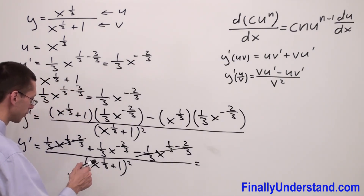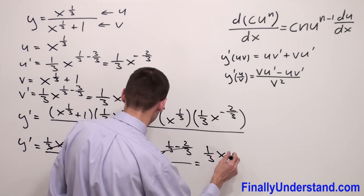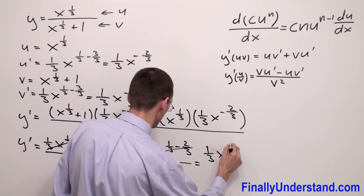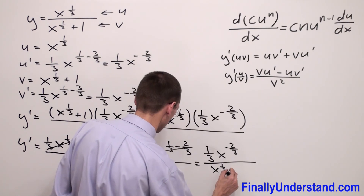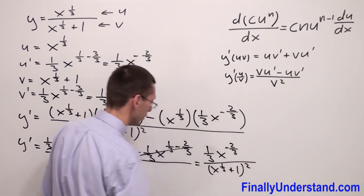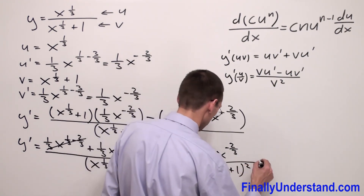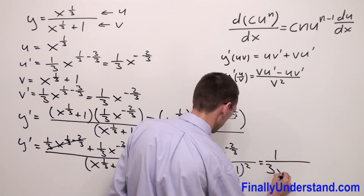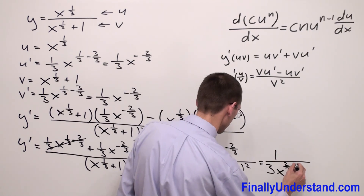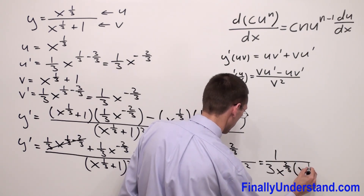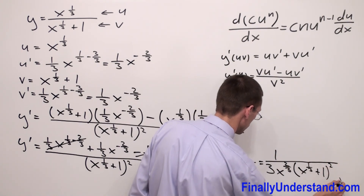And in the numerator, I have 1 third x to the power negative 2 thirds, and in the denominator I have x to the 1 third plus 1 to the second power. Because I have a negative exponent and a fraction, I can rewrite this as 1 over 3x to the power 2 thirds times x to the power 1 third plus 1 to the second power. And this is the solution to my problem.